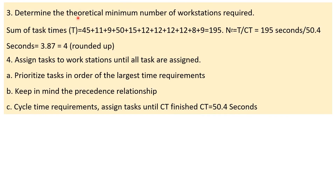Step 3: determine the theoretical minimum number of workstations. This is calculated by dividing the sum of all task times by the cycle time. The sum of all task times is 195 seconds. Dividing 195 by 50.4 gives 3.87, which we round up to 4. So the minimum number of workstations is 4, though the actual number may be higher.